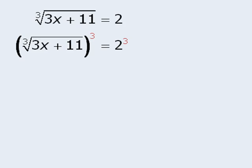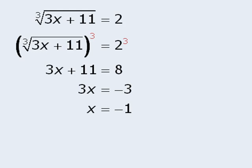The cube root of 3x plus 11, all to the power of 3, is equal to 3x plus 11. And 2 to the power of 3 equals 8. From here we can solve for x by subtracting 11 from both sides, and then dividing both sides by 3 to get x equals negative 1.